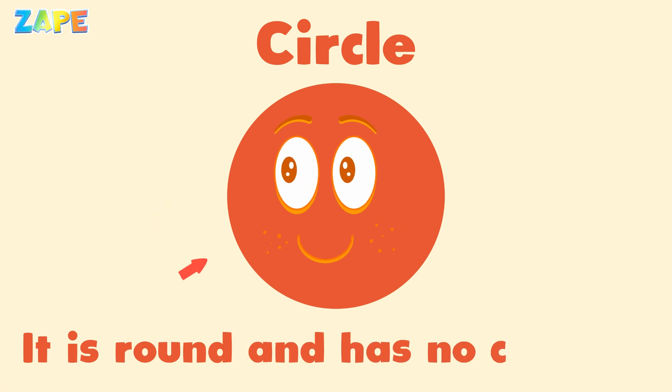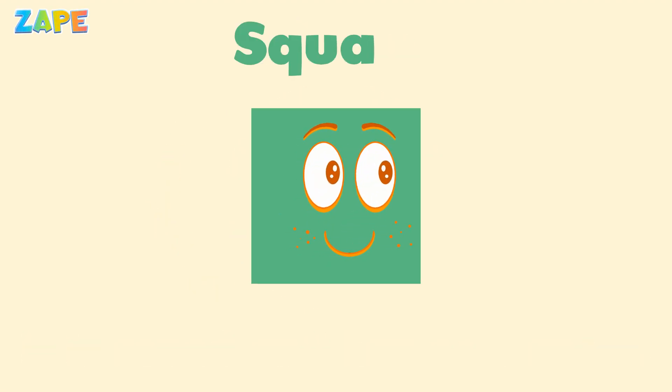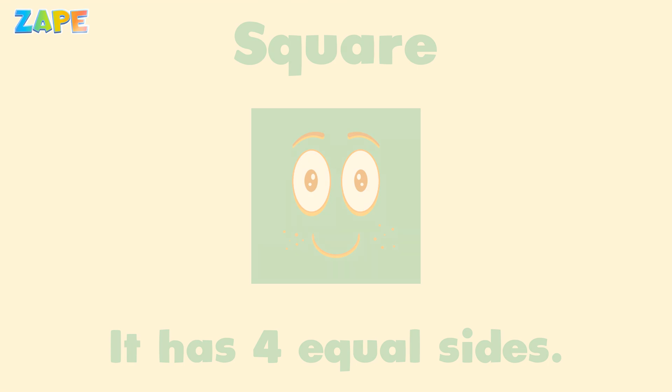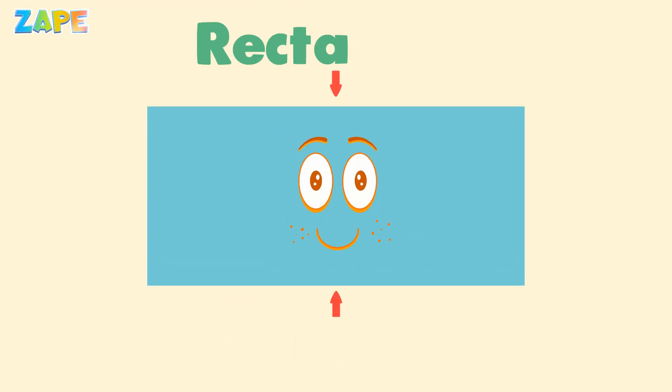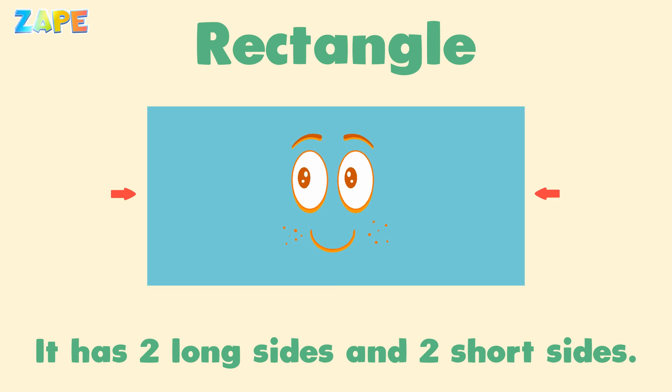A circle, it is round and has no corners. A square, it has four equal sides. A triangle, it has three sides. A rectangle, it has two long sides and two short sides.